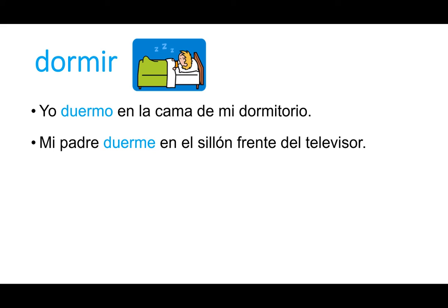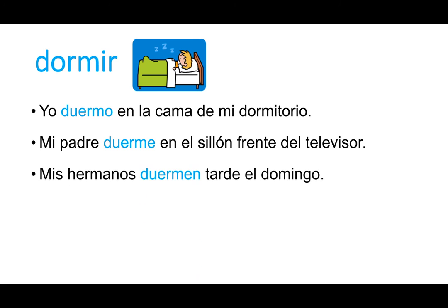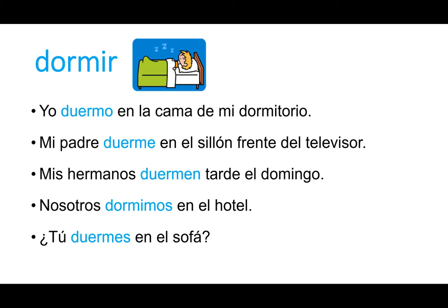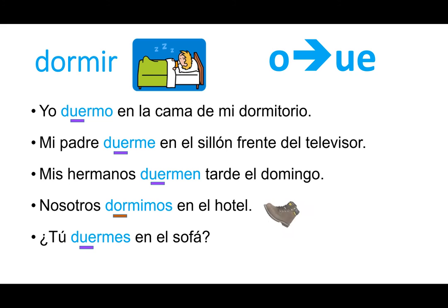Now let's look at some more stem changing verbs that are similar. Let's look at dormir. Yo duermo en la cama de mi dormitorio. Mi padre duerme en el sillón frente del televisor. Mis hermanos duermen tarde el domingo. Nosotros dormimos en el hotel. Tú duermes en el sofá. Since it's similar to poder, you should notice that the O changes to UE everywhere except nosotros, where it stays the same as the original infinitive. So dormir is also an O to UE stem changer and a boot verb.